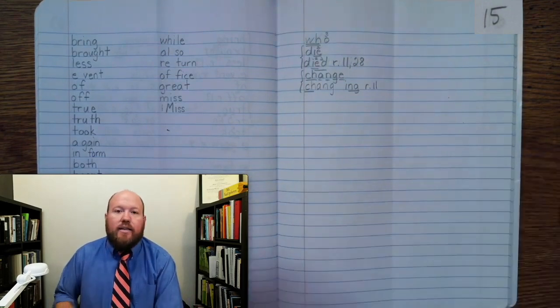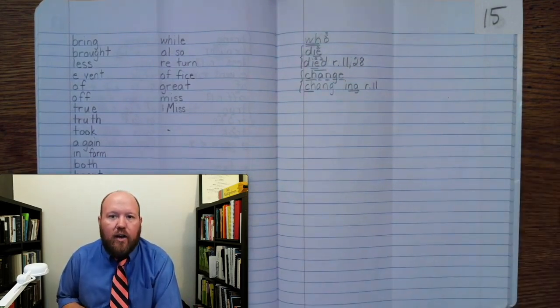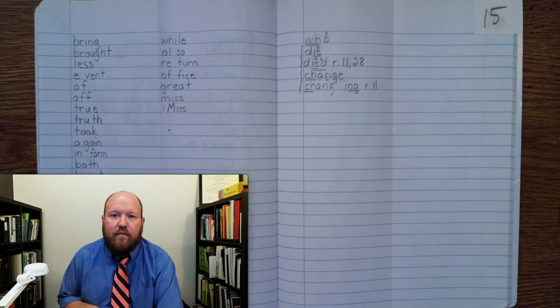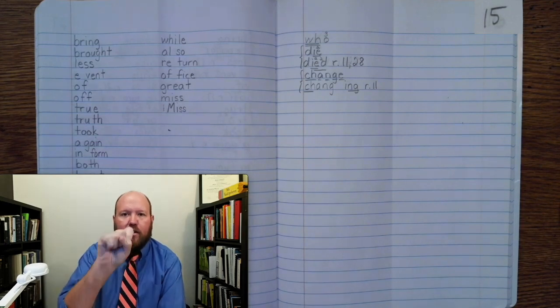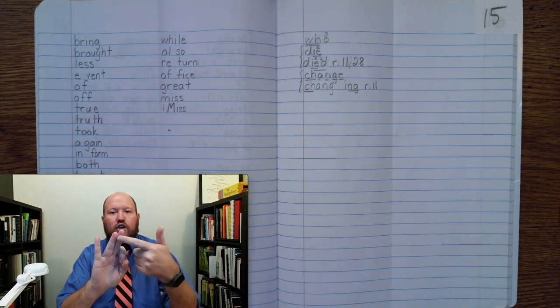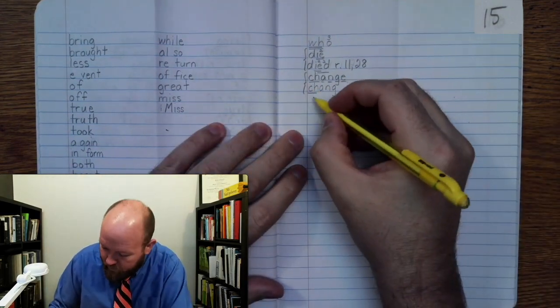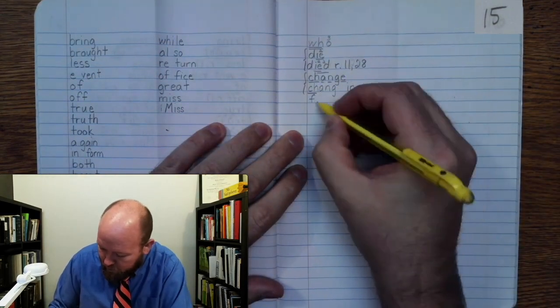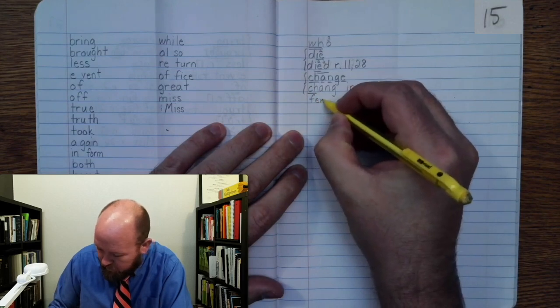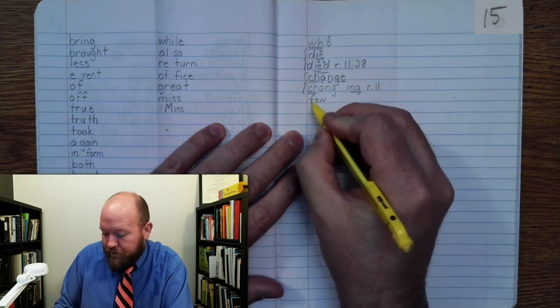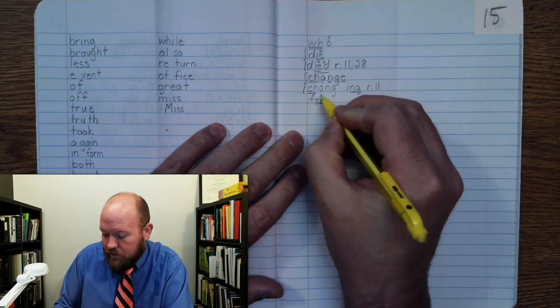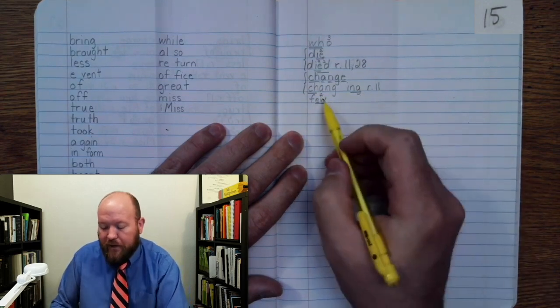The next word is FEW. Like I just want a few cookies. Few. Few: F-U. And here we're going to use the U phonogram. Few. F-U. Once, two. It's making a second sound.